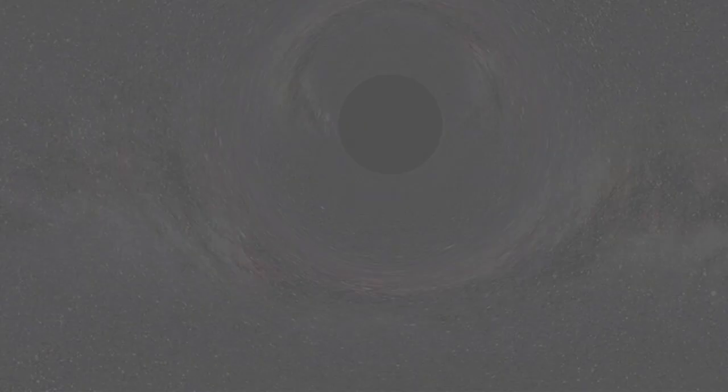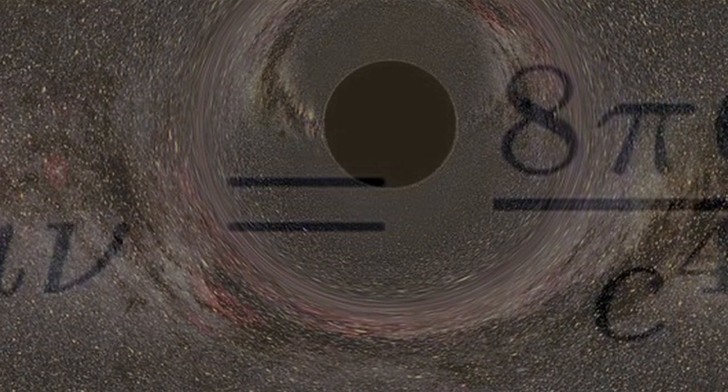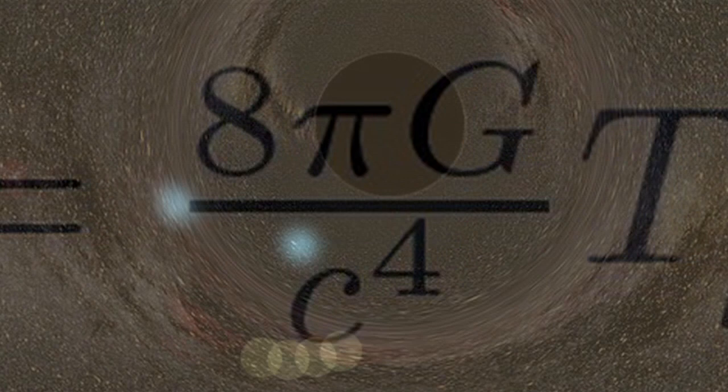A few years later, he came up with another amazing theory — what we call the general relativity theory — that basically combines special relativity with the theory of gravitation. It's beautiful because of the power that it has in explaining so many experimental observations: from the famous apple falling from a tree, to black holes, to the earth orbiting around the sun, the moon orbiting around the earth.